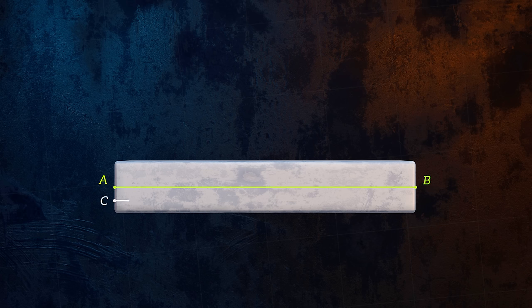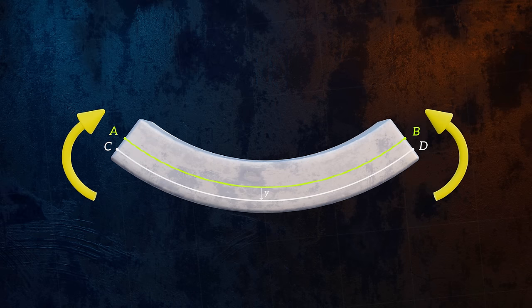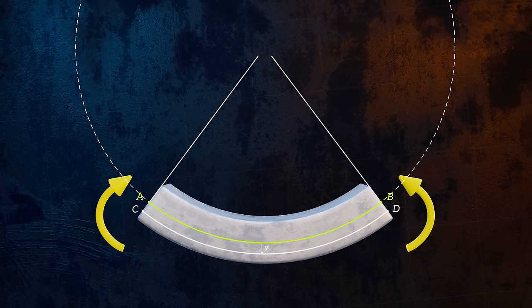Let's watch how a fiber at the neutral axis, between points A and B, and a fiber between points C and D, located at a distance Y from the neutral axis, deform. Since this is a case of pure bending, we can see that the fibers bend into a perfectly circular arc. We'll call the center of the circle O. Before any deformation, the fibers are all the same length. After the deformation, the length of the neutral axis has stayed the same, but the length of the fiber between points C and D has increased.